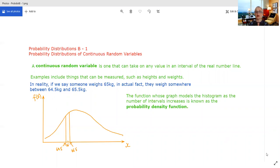For now we're just talking about in general a probability distribution of a continuous random variable. What's the difference between continuous and discrete? Well a continuous random variable can take on any value within a particular interval.